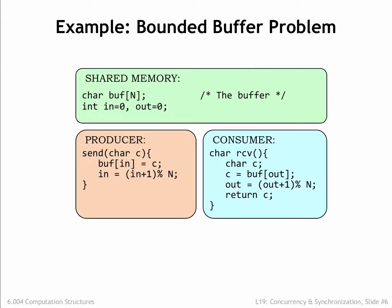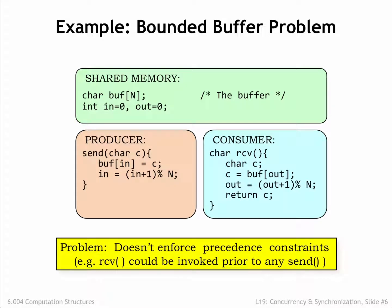Here's what the code for the producer and consumer might look like. The array and indices for the circular buffer live in shared memory where they can be accessed by both processes. The send routine in the producer uses the write index IN to keep track of where to write the next character. Similarly, the receive routine in the consumer uses the read index OUT to keep track of the next character to be read. After each use, each index is incremented modulo N. The problem with this code is that, as currently written, neither of the two precedence constraints is enforced — the consumer can read from an empty buffer, and the producer can overwrite entries when the buffer is full. We'll need to modify this code to enforce the constraints, and for that we'll introduce a new programming construct to provide the appropriate inter-process synchronization.